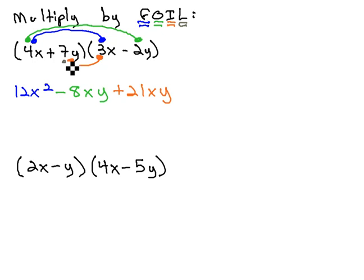L stands for the last two terms, meaning we multiply the last term of the first polynomial by the last term of the second polynomial. 7y times negative 2y is negative 14y squared.